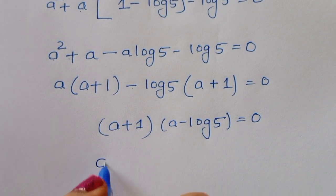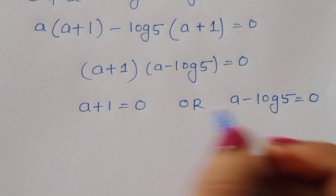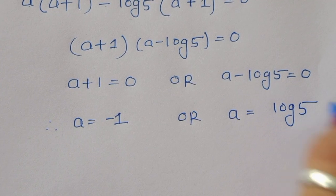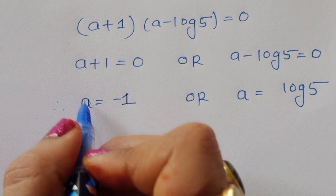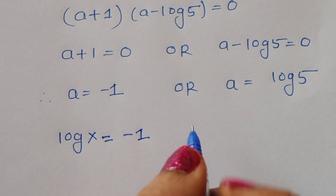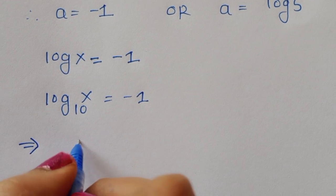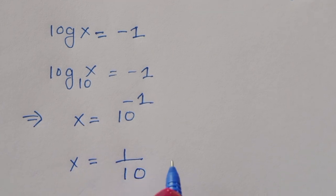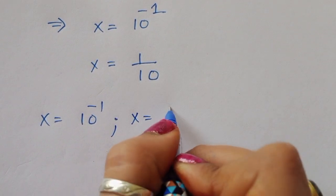We now have two equations: a + 1 = 0, giving a = -1, or a minus log(5) = 0, giving a = log(5). Since a = log(x), for the first case: log(x) = -1, so log(x) to the base 10 equals -1, therefore x equals 10 raised to -1, or x equals 1/10.